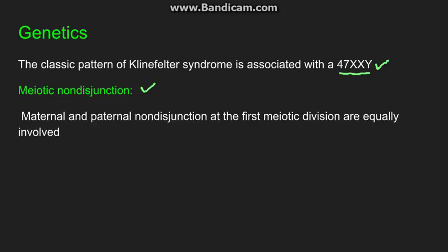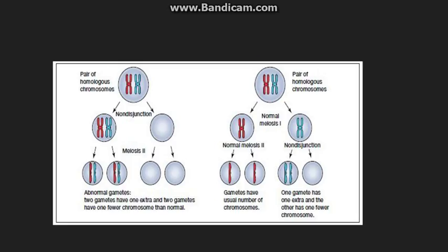What is meiotic non-disjunction? I have discussed this in detail in my video on Down syndrome, but briefly: if this is a cell with a pair of homologous chromosomes, non-disjunction means failure of separation of the homologous chromosomes or sister chromatids. One cell gets both chromosomes, leading to abnormal gametes — one gamete having n+1 chromosomes and the other having n-1. If the extra chromosome is an X chromosome, and the egg with two X chromosomes is fertilized by a sperm with a Y chromosome, it leads to the karyotype XXY.